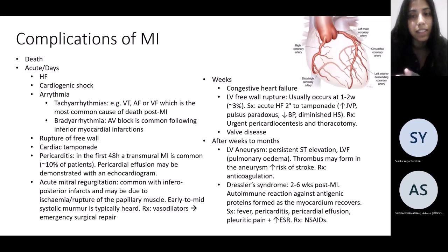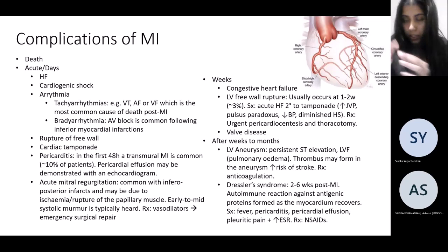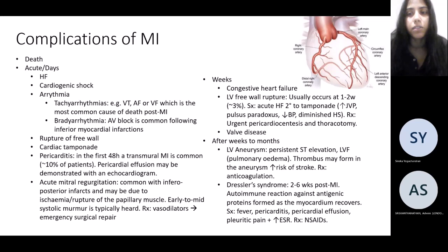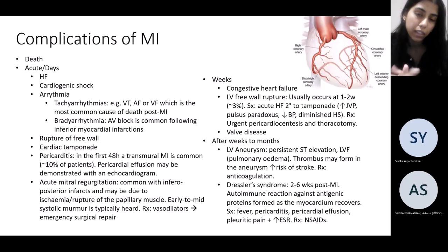You can also get cardiac tamponade and pericarditis in the first 48 hours. The echo in the previous question showed no effusion — an effusion would have been in keeping with pericarditis. Acute MR is due to ischemia and rupture of the papillary muscles controlling the mitral valve. Mid-term complications include congestive heart failure and free wall rupture, which tends to occur about one to two weeks post-MI.